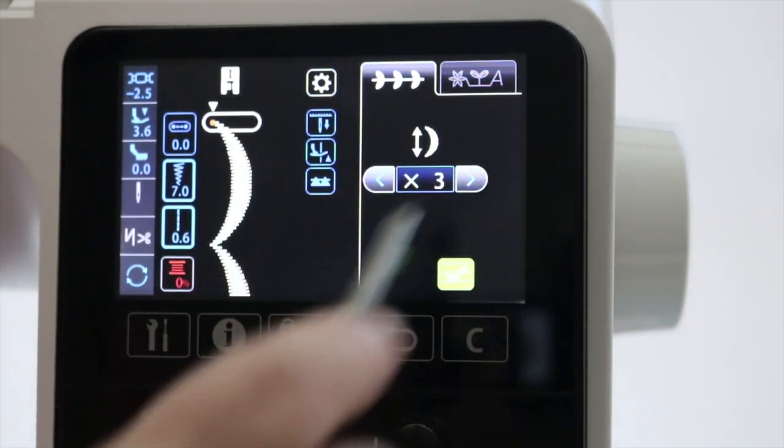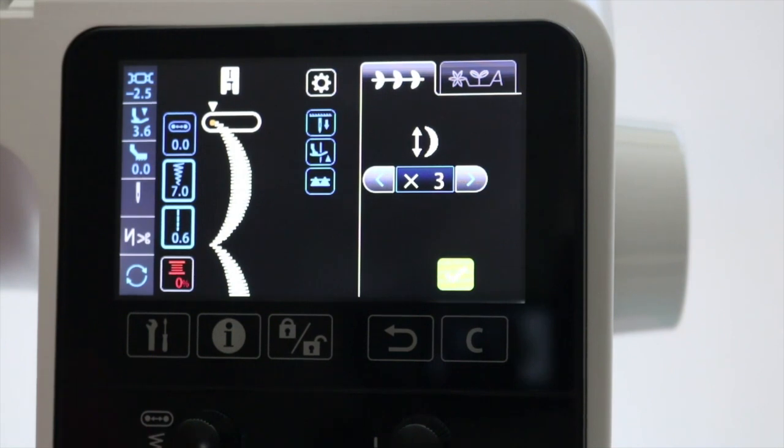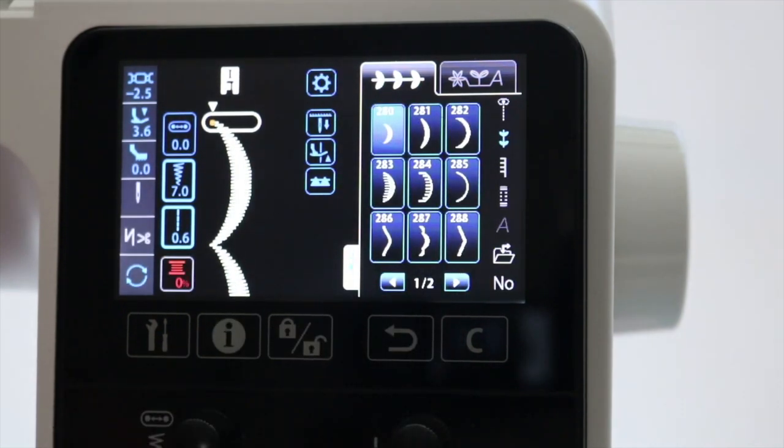Maybe I want to make this three times the length. All I have to do is touch that until it says times three, touch the check mark to close the window, and I'm now ready to stitch my pattern.